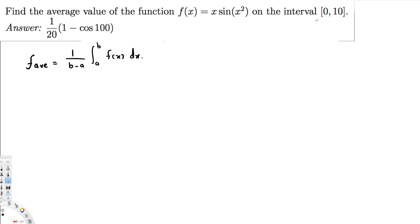So here we know this is going to be a and this is going to be b. So b minus a is going to be just 1 over 10 minus 0, and this is going from 0 to 10. f(x) is going to be this function right here, x sin(x²) dx.